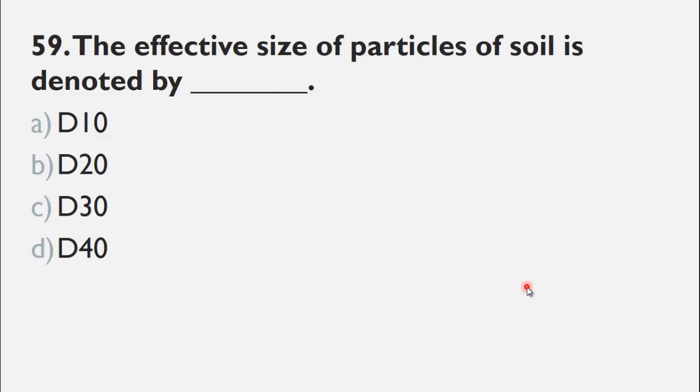MCQ number 59 is: The effective size of particles of soil is denoted by ___. A) D10, B) D20, C) D30, and D) D40. The right choice for this question is A, D10.